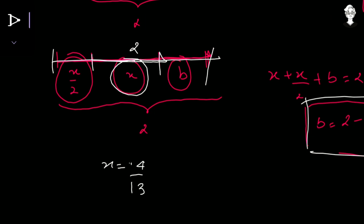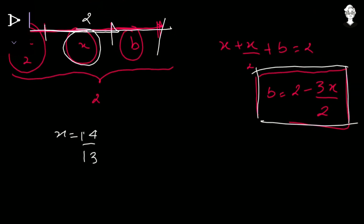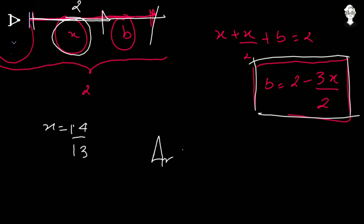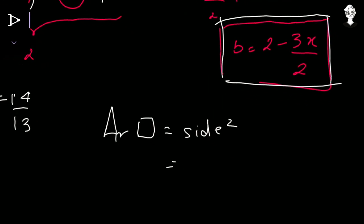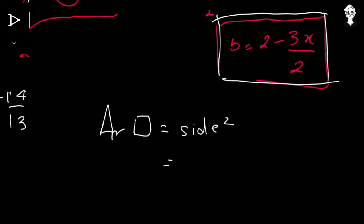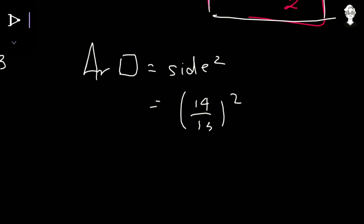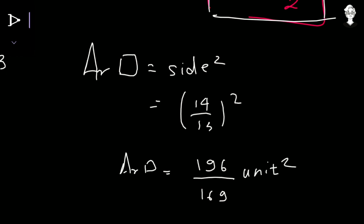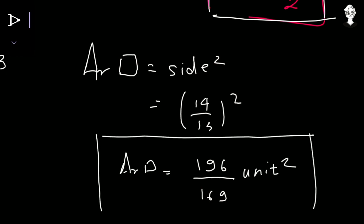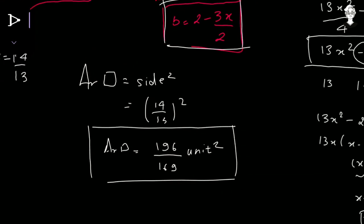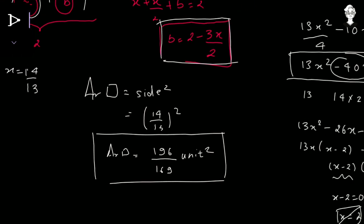We get that x equals 14/13. The area of a square is the side squared, and the side of this green square was x. So the area equals (14/13) squared. 14 squared is 196 and 13 squared is 169, so the area of the green square is 196/169 square units.